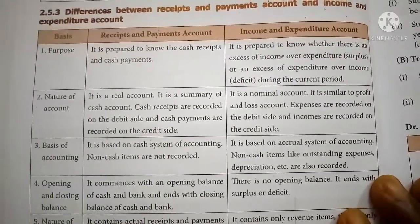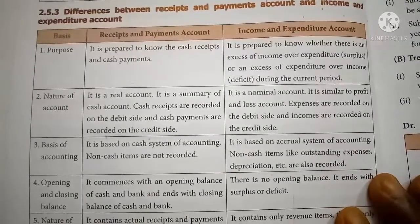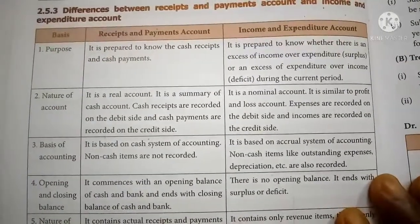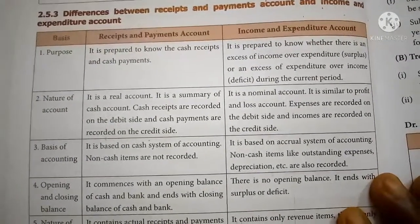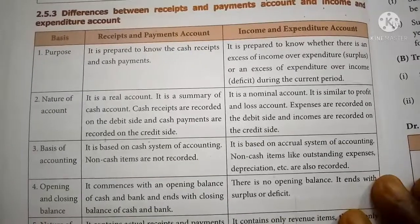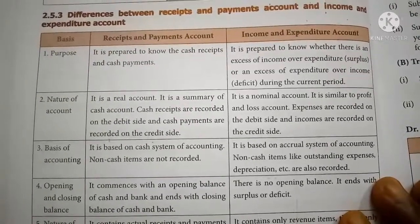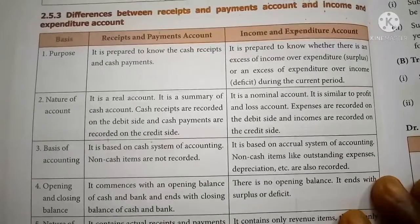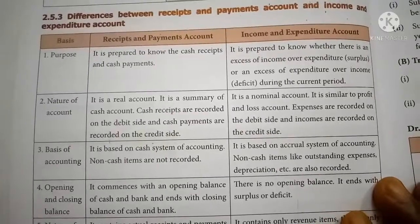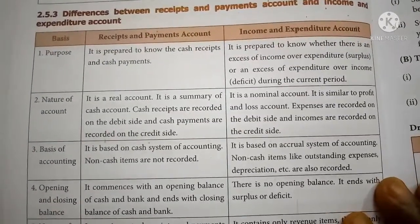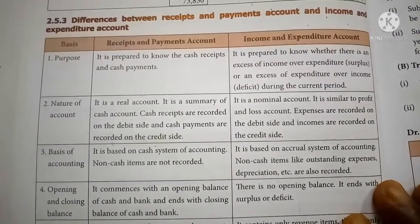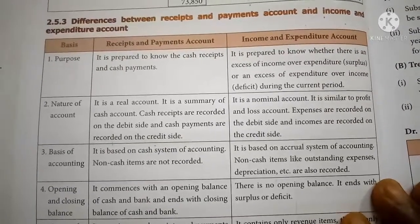Basis of accounting: The Receipts and Payments account is based on the cash system of accounting; non-cash items are not recorded — only cash transactions are recorded. The Income and Expenditure account is based on the accrual system of accounting, so non-cash items like outstanding expenses, depreciation, and profit or loss on sale of assets must also be recorded.